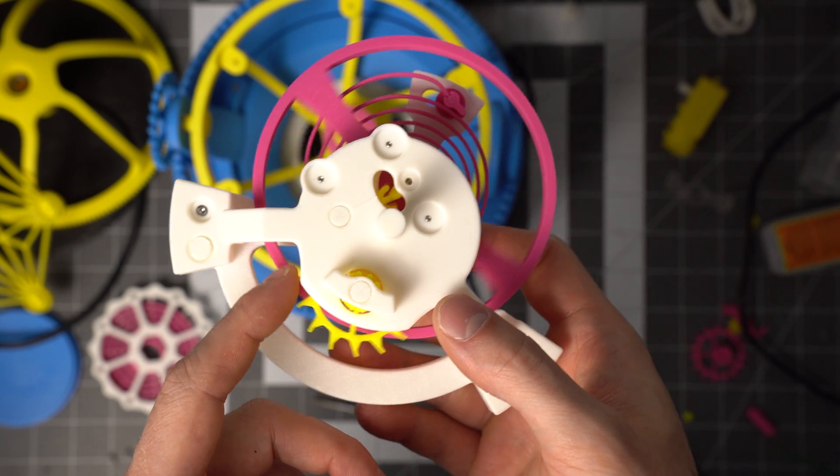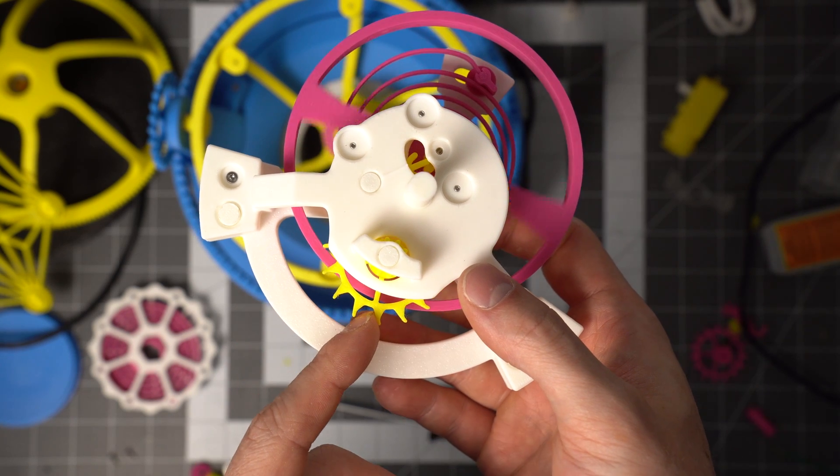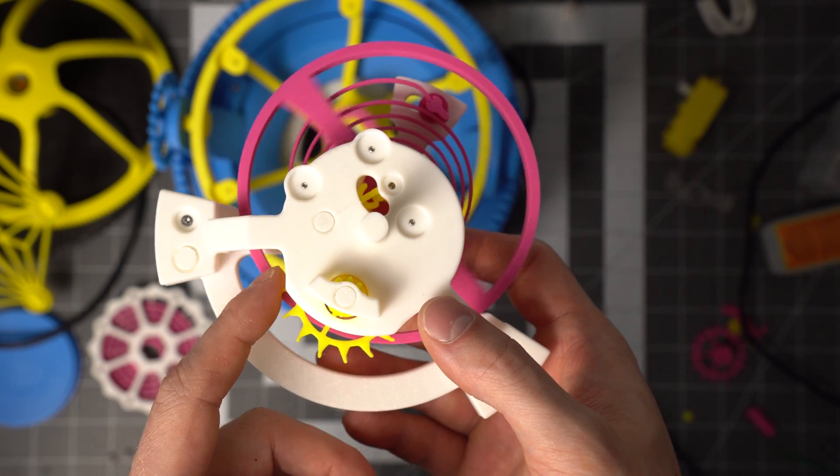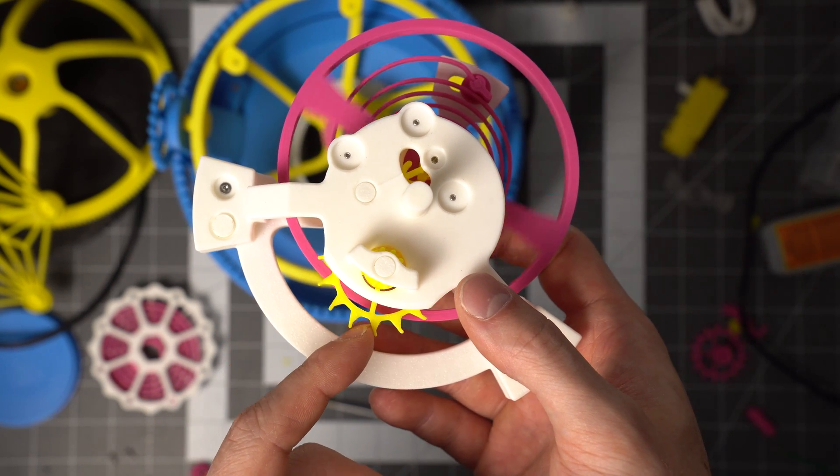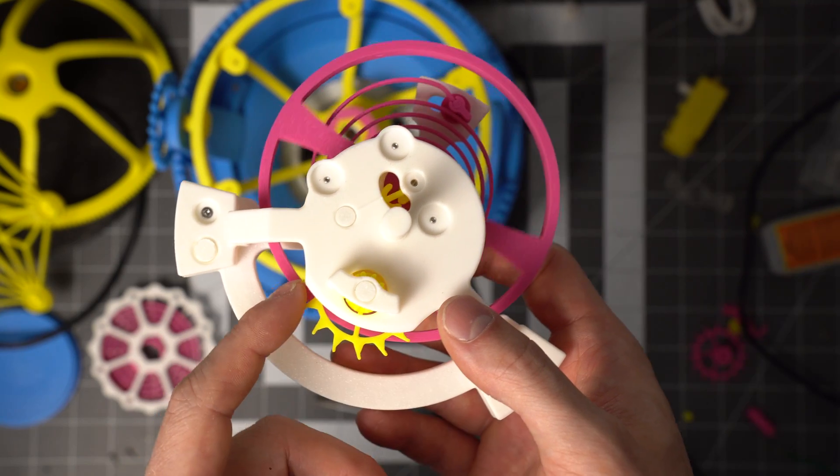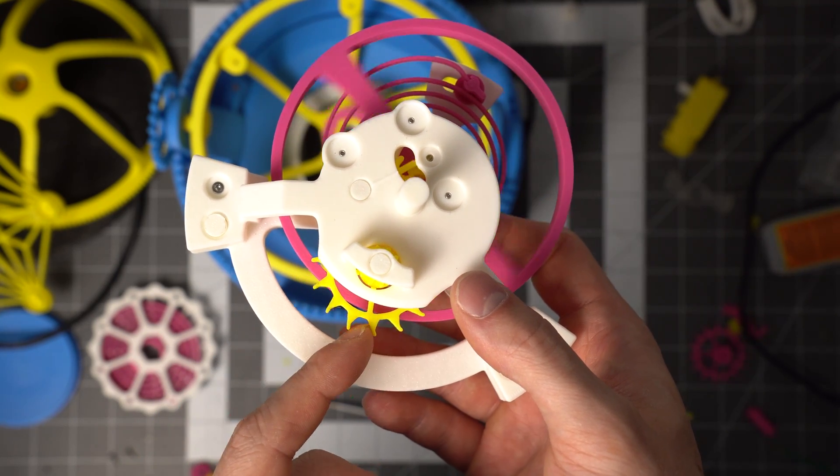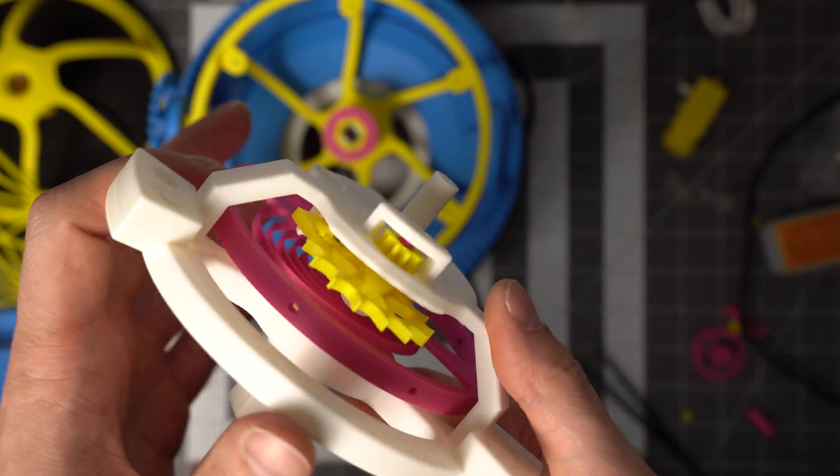Before going any further, you need to check that this assembly does the ticking that it's expected to do. So just apply a light pressure in the forward direction on that escapement wheel, and it should tick back and forth, and you're ready to start putting this thing all together.